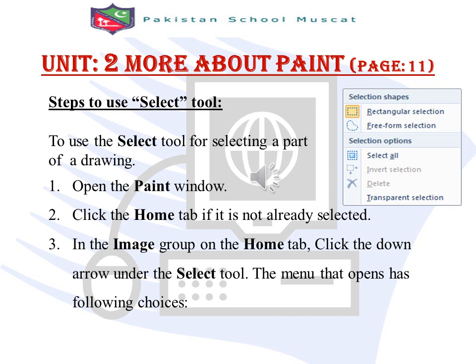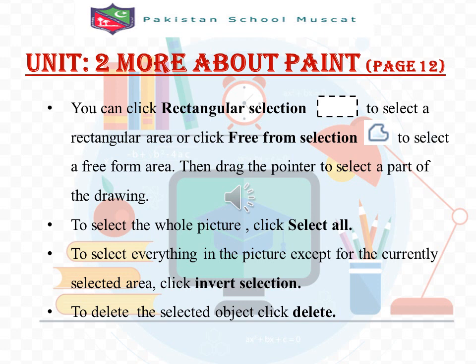Number three, in the Image group on the Home tab, click the down arrow under the Select tool. The menu that opens has the following choices: you can click Rectangular Selection to select a rectangular area, or click Freeform Selection to select a freeform area. Then drag the pointer to select a part of the drawing. To select the whole picture, click Select All. To select everything except the currently selected area, click Invert Selection. To delete the selected object, click Delete.